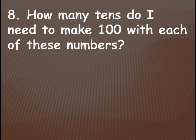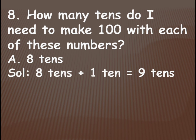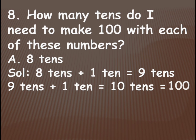How many 10s do I need to make 100? 100 means 10 tens. With each of these numbers, we need to add some tens to make 100 — that is 10 tens. Let's see: 8 tens. If you add 1 ten to 8 tens it becomes 9 tens, which is 90. So 8 tens plus 1 ten equals 9 tens — but you need 10 tens. For this 9 tens if you add 1 more ten, that becomes 10 tens which is 100. So step by step you add 1 ten at a time to reach 10 tens, which is 100.